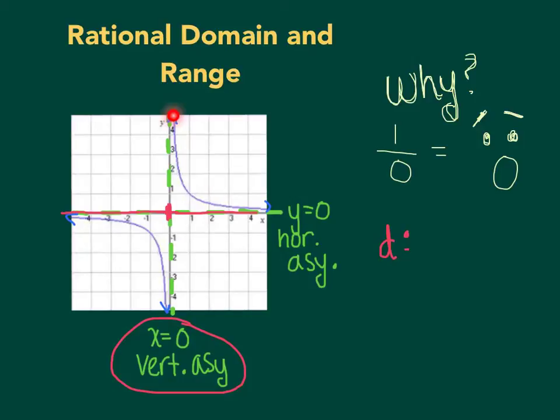So x equals 0 is actually not in the domain. So we could say the domain is all real numbers except x equals 0, or we could also say it's negative infinity to 0, not including 0, and then 0 to infinity. Notice I used parentheses to indicate it's not included.